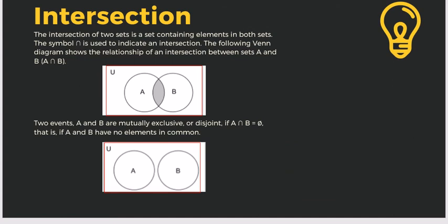Let's have the intersection. The intersection of two sets is a set containing elements in both sets. The symbol ∩ (inverted ∪) is used to indicate intersection. The shaded middle region in a Venn diagram represents the intersection of A and B. Two events A and B are mutually exclusive or disjoint if A ∩ B equals null — that is, A and B have no elements in common, so we get no intersection.